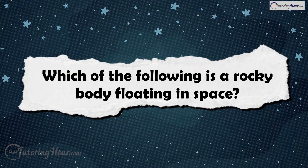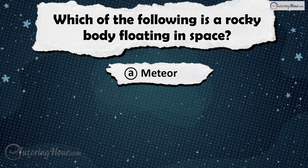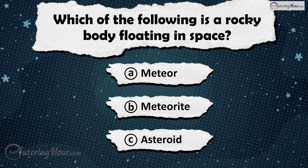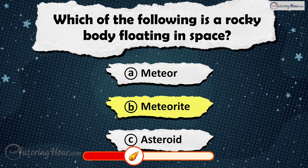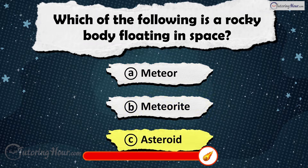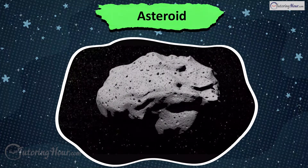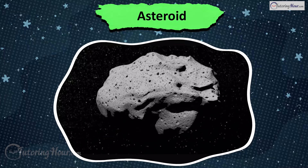Here's our first question. Which of the following is a rocky body floating in space? Is it A) Meteor, B) Meteorite, or C) Asteroid? The answer is Asteroid. Asteroids are large rocky bodies that orbit the Sun.